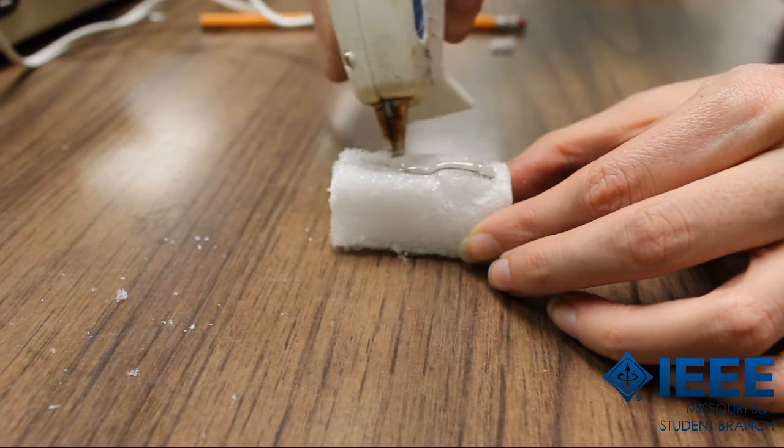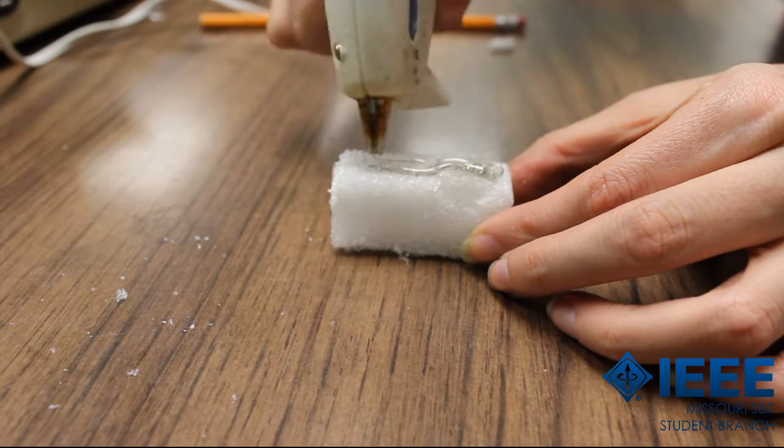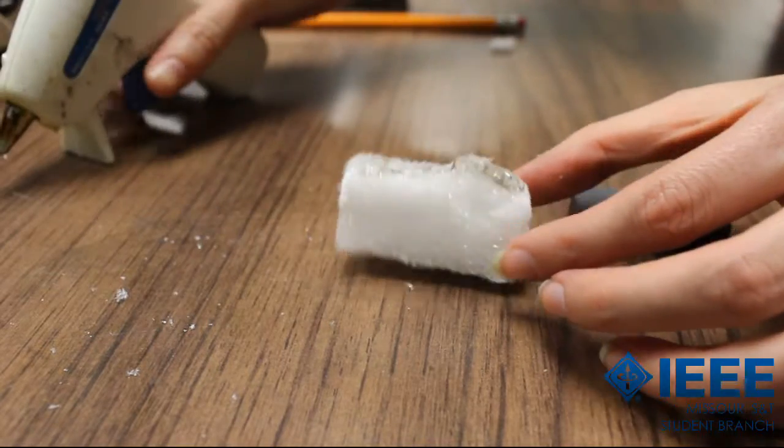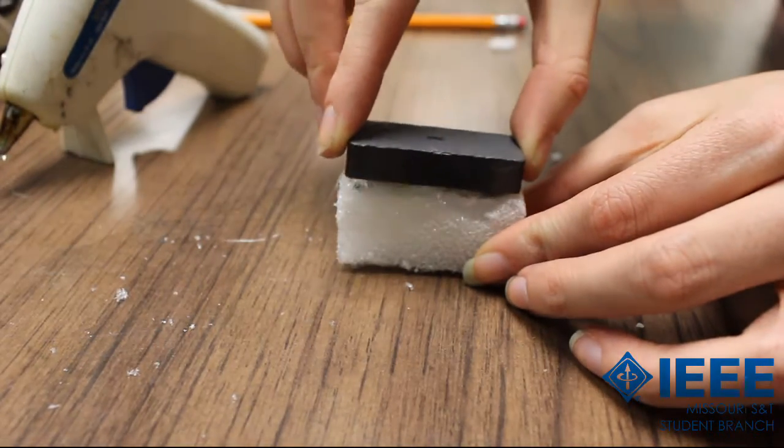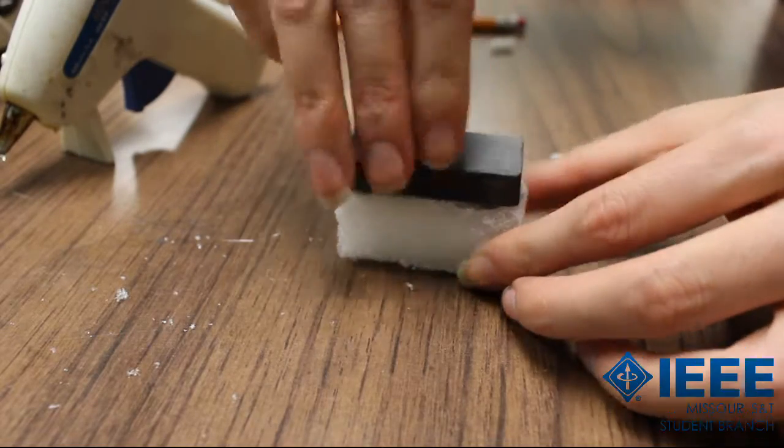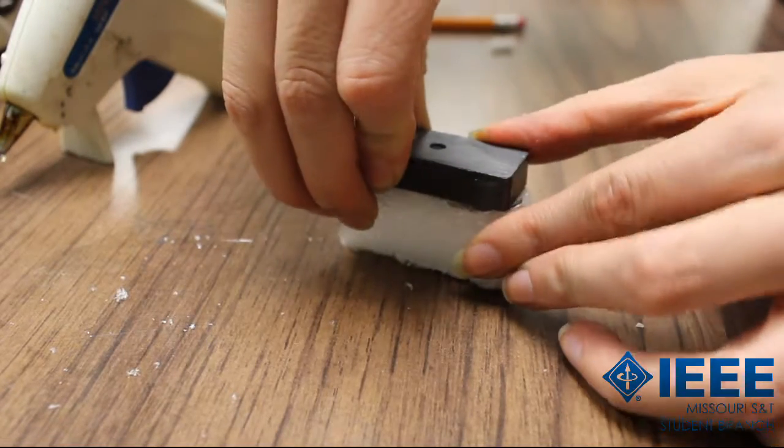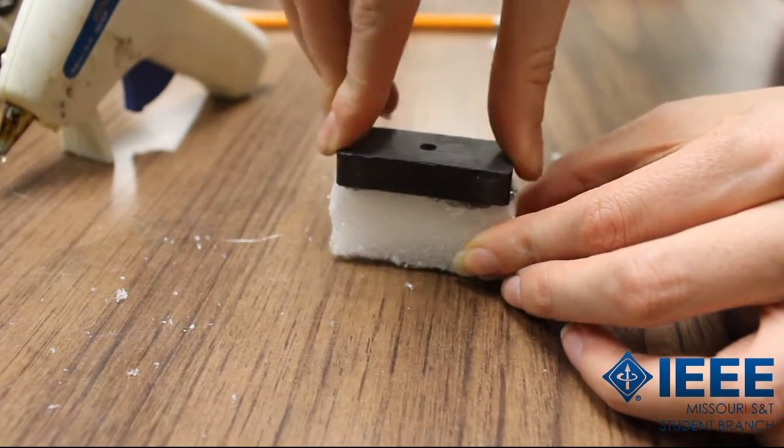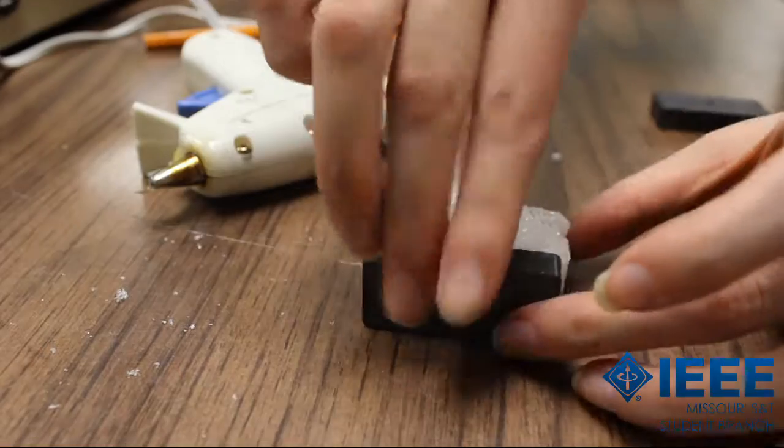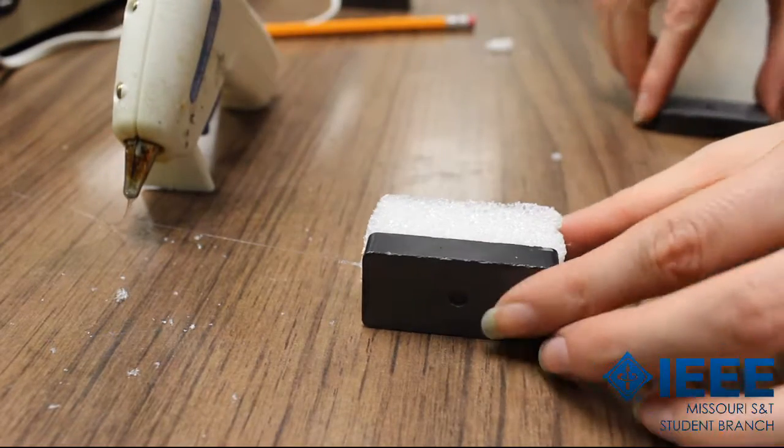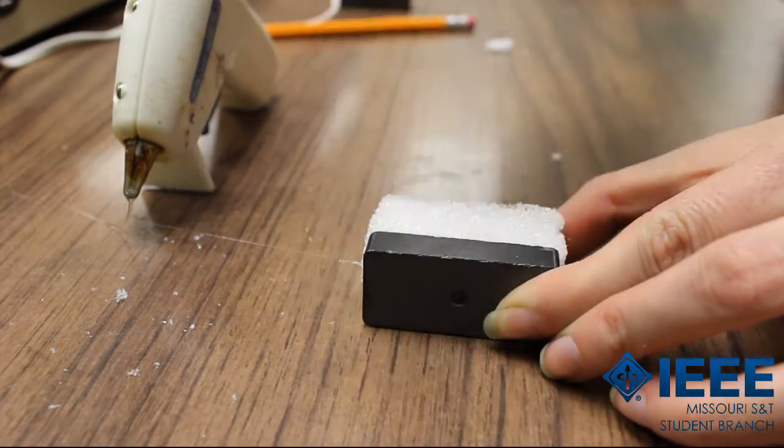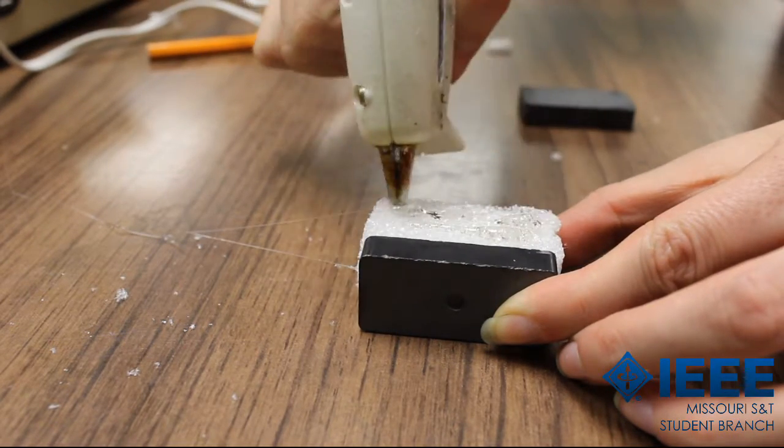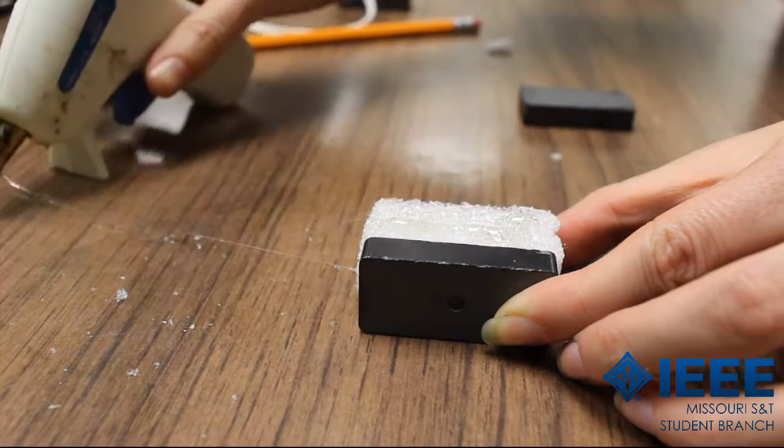Next, we're going to attach the magnets to the styrofoam. You're going to want to use glue for this step. Begin by gluing one magnet to one side of the styrofoam block. Wait for the glue to dry, rotate the block by 90 degrees, and then glue the second magnet. You will want the sides of the adjacent magnets to be attracted to each other. Continue this process until all four magnets are glued to the block.